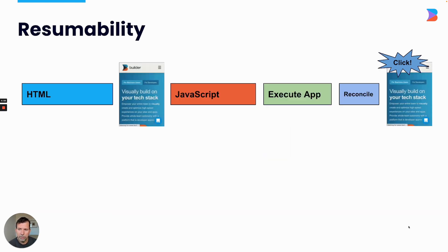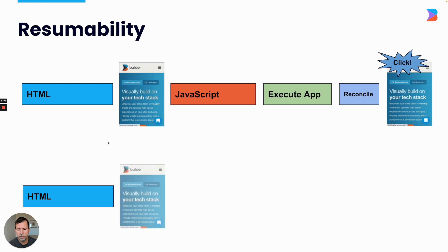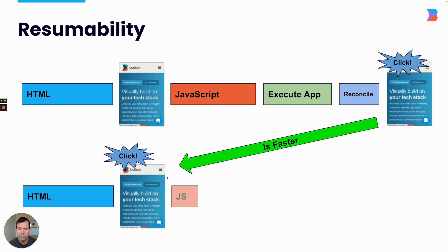So how does this compare to resumability? Let's look at how resumability is different. We send HTML as before — nothing changes there. Because the HTML shows up, we can render the application. But what's unique about resumability is that in this HTML, we send a really tiny amount of JavaScript — about one kilobyte — that takes super quick to execute. And that makes it so that this page is now instantly interactive. If you interact with the page and don't yet have the JavaScript, the interaction is fast and we immediately start downloading the JavaScript, so that hopefully by the time you are interacting, it's already downloaded. The end result is that you can have much faster interactions.